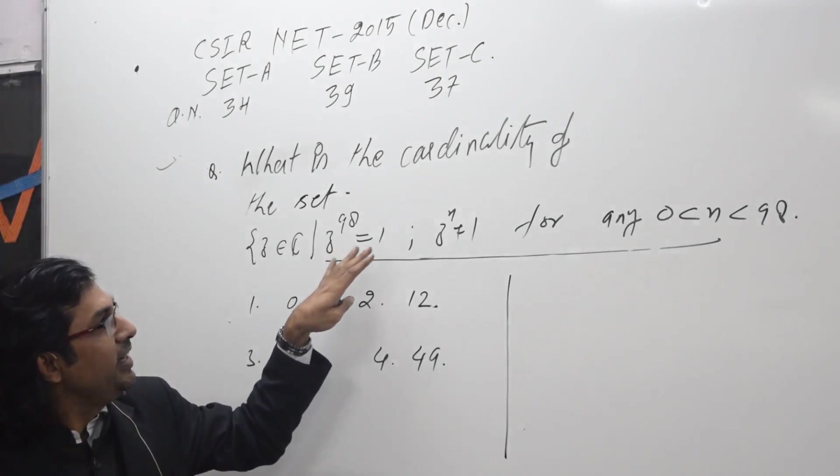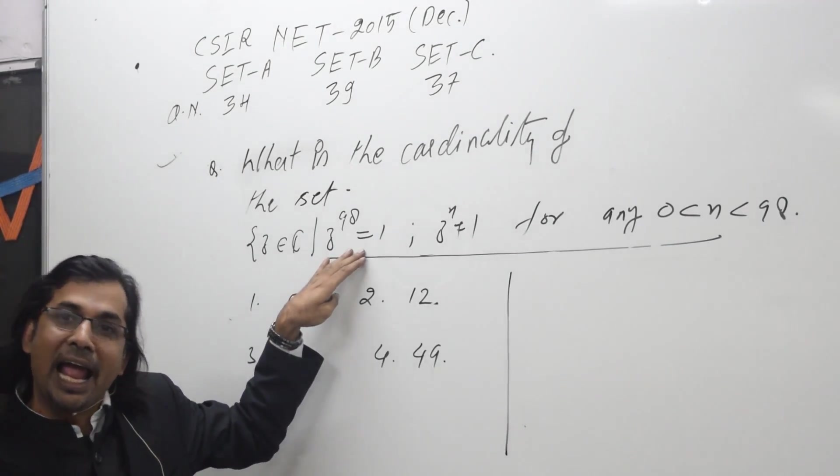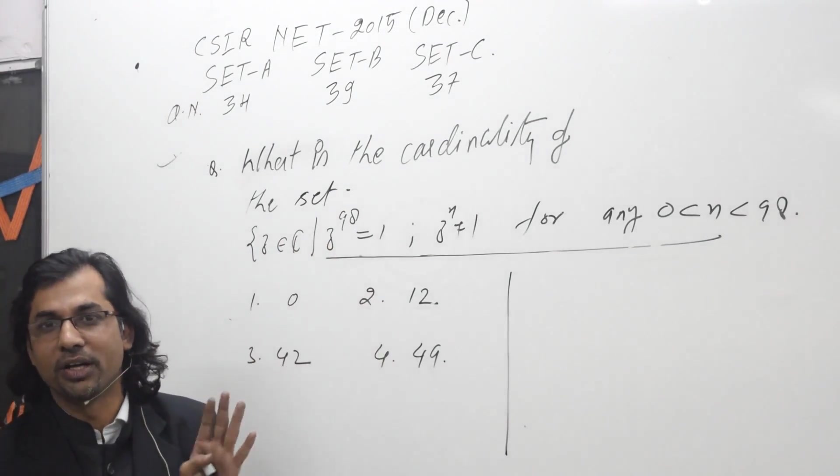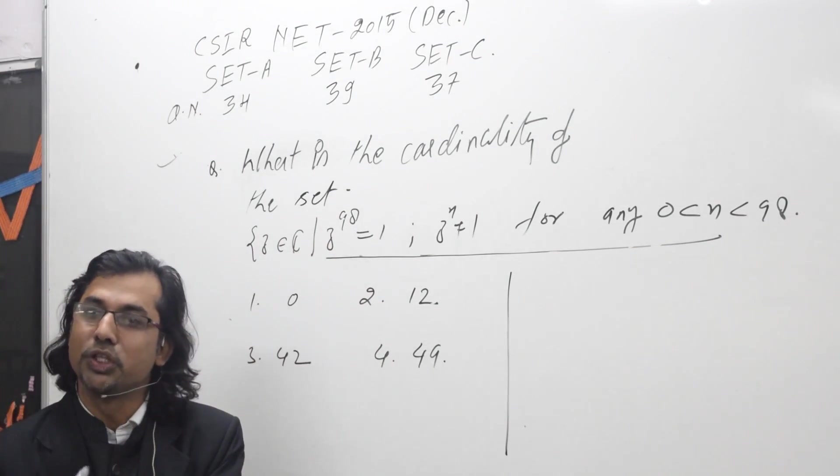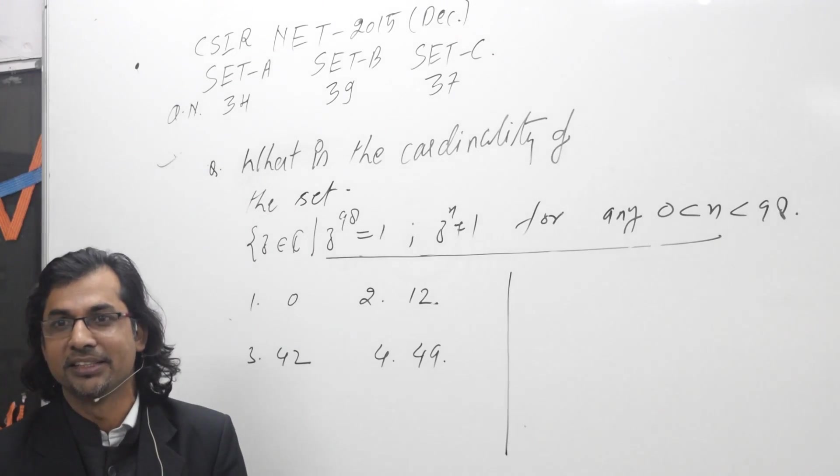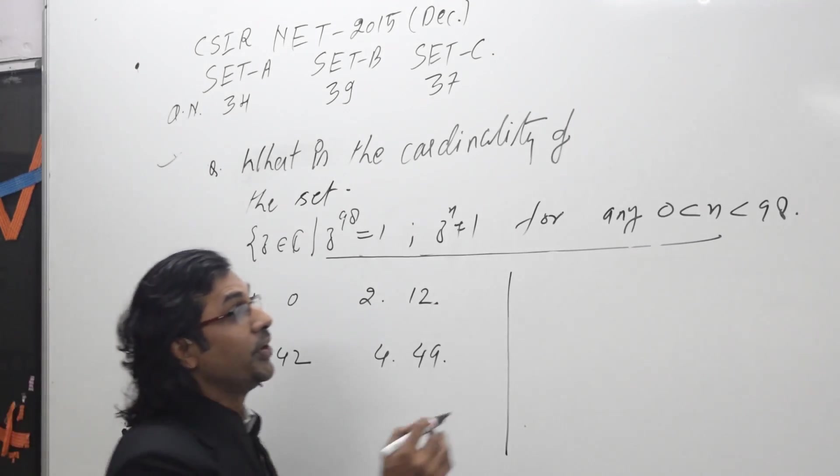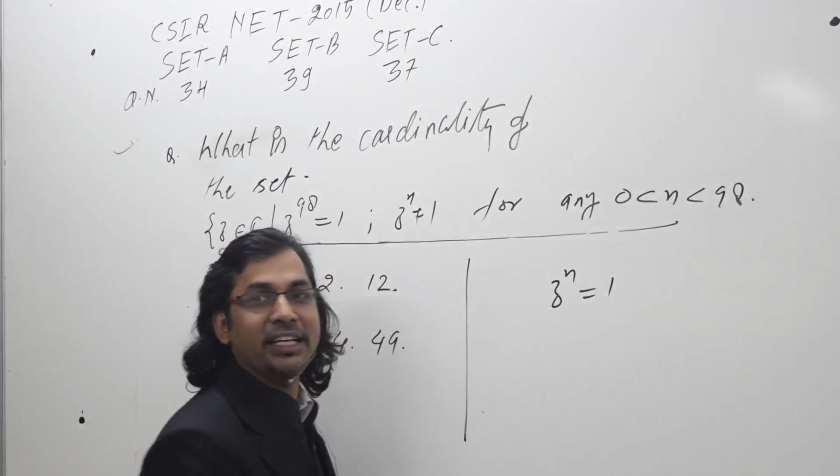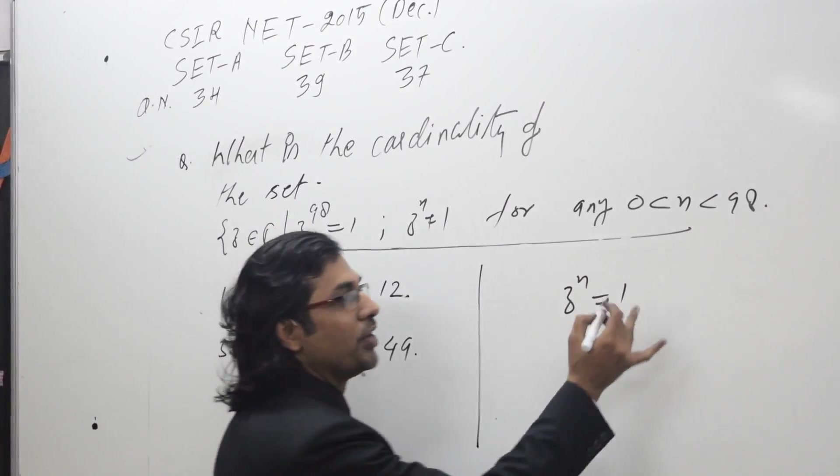So we are being asked the element of order 98 in C star, that means the group of non-zero complex numbers with respect to multiplication. Now in C, the number of elements satisfying this condition is always finite.